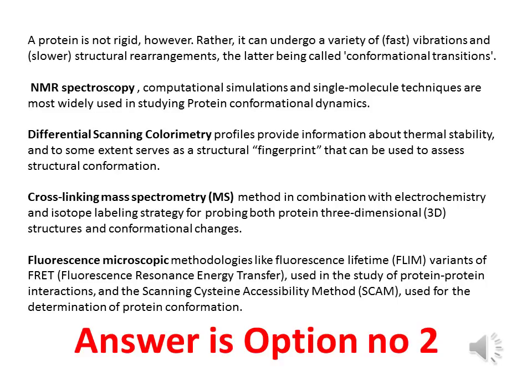Fluorescence microscopic imaging methodologies such as fluorescence lifetime (FLIM), variants of fluorescence resonance energy transfer (FRET), and scanning cysteine accessibility methods (SCAM) can be used for determining protein conformation and protein-protein interactions. So these four techniques are used for determining protein conformational transitions in one way or another. However, differential scanning calorimetry is mainly used for calculating thermal stability, and only to some extent for conformation — so DSC is the correct answer, option number two.